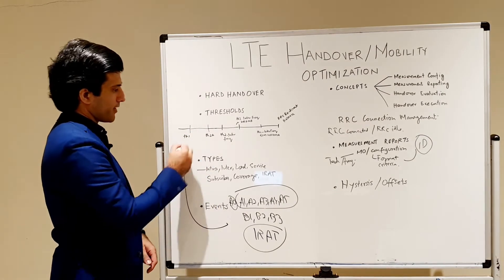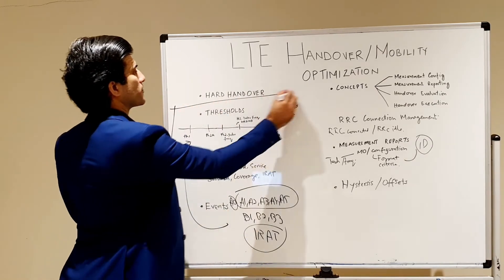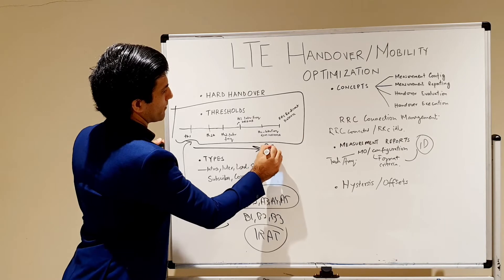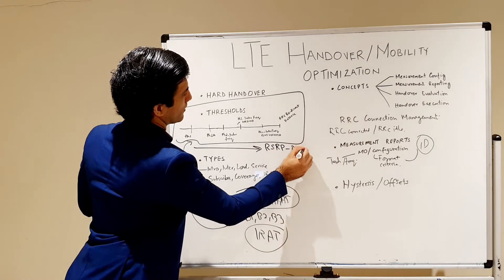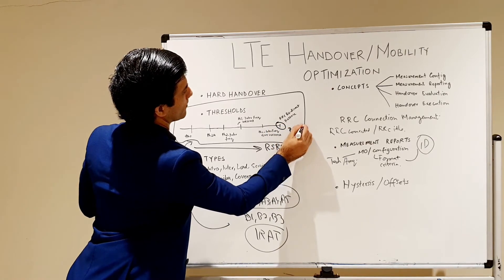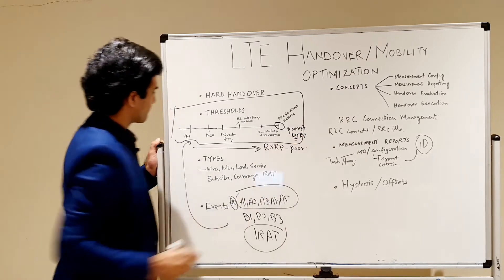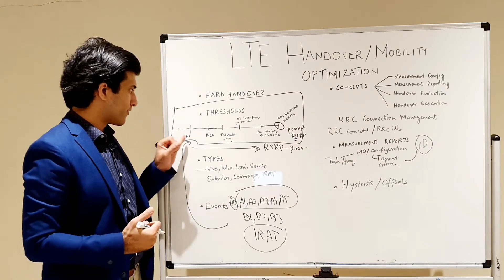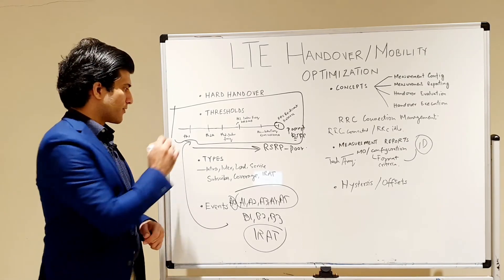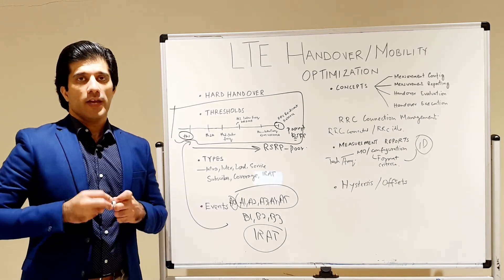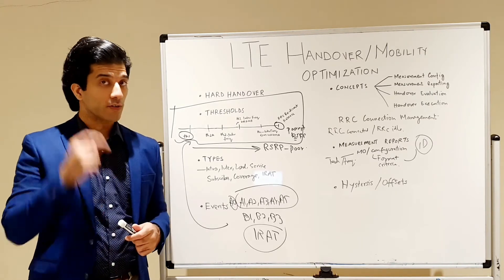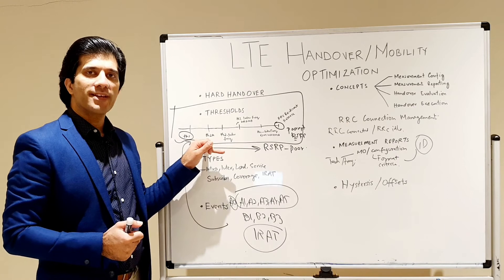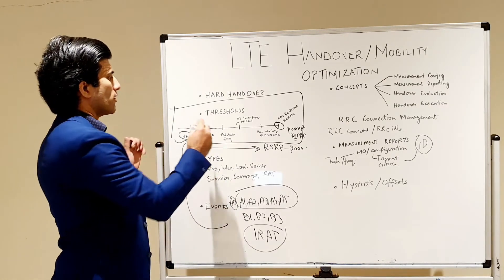Moving to thresholds, these are the basic threshold concepts for LTE. The direction shown is where RSRP is getting poorer. Threshold 1 is defined as the point where the mobile starts measurement reporting — if signal quality is better than Threshold 1, no measurement reporting occurs, in order to save battery life. Then we have Threshold 2a, and when this threshold is passed, a concept called measurement gap is introduced.